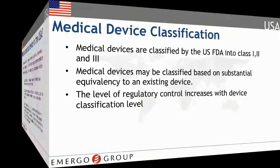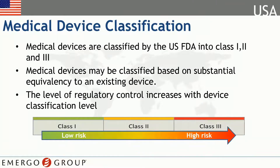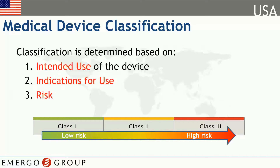The United States divides medical devices into three classifications: Class I, II, and III. The classification depends on a number of factors, including how similar it is to an existing device. Obviously, the higher the classification, the more it is regulated. The classification is initially determined based on its intended use, indications for use, and the risk to the patient or user.